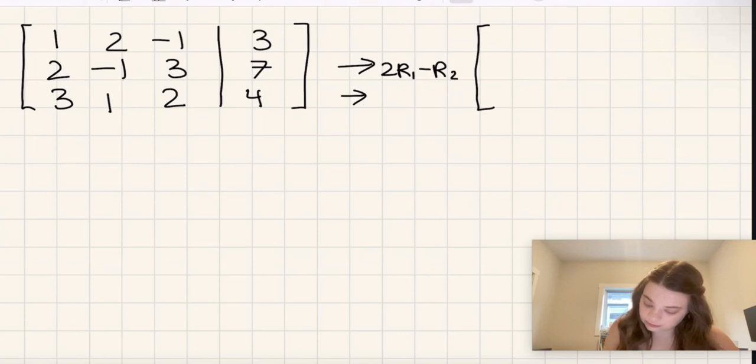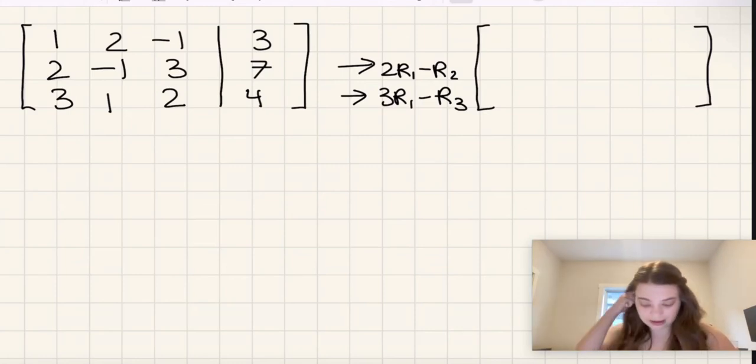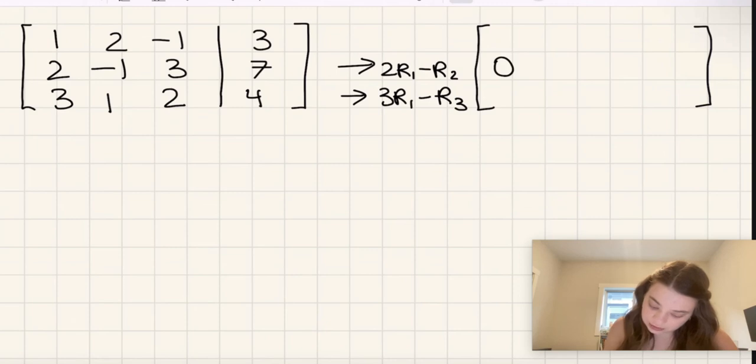So 2R1, if we multiply 1 by 2, we get 2, minus 2 is 0, so I'll put a 0 here. Then if we multiply 2 by 2 and then subtract negative 1, we get 5. If we multiply negative 1 by 2, we get negative 2, and then we subtract 3, the number that's in row 2, we get negative 5.